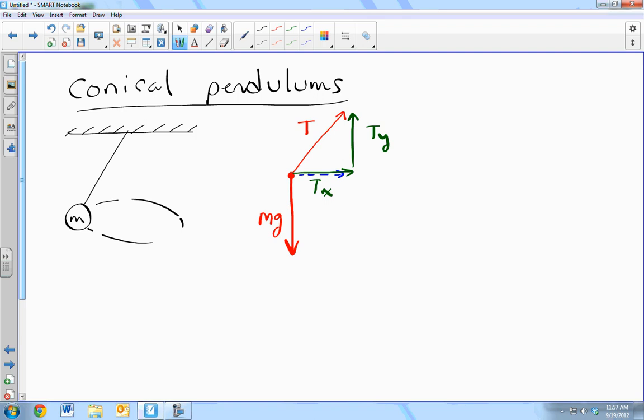So we draw a free body diagram, and then we deal with the angles. So what is tension y going to be equal to? Let's say the angles here. T cosine theta. T cosine theta. T x will then be... T sine theta. T sine theta.